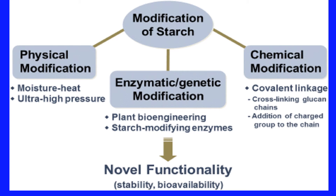Modification of starch can occur through physical modification, chemical modification, and enzymatic modification. Physical modification involves heat, moisture, and ultra-high pressure. Chemical modification involves covalent linkages and cross-linking processes. Enzymatic modification uses starch-modifying enzymes. The ultimate reason for modification of starch is to achieve novelty and enhanced functionality of the starch molecules.